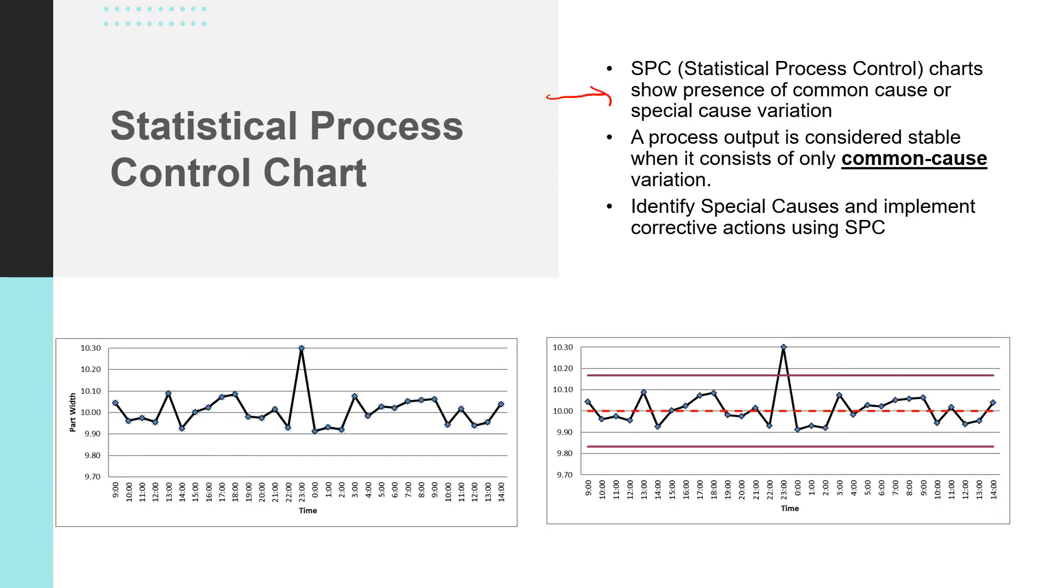SPC charts show the presence of common cause and special cause variations. A process output is considered as stable if there is only common cause variations present, which is inherent to the process. And we will need to check and monitor the process, identify the special causes, and implement the corrective actions using SPC control methods.